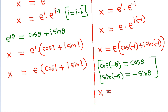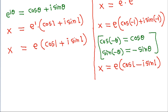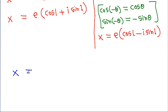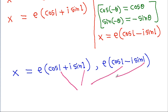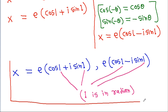So the two values of x are e times (cos(1) plus i·sin(1)) and e times (cos(1) minus i·sin(1)). Note that the 1 here is in radians. These are the two values of x.